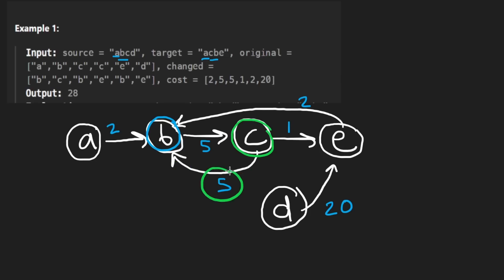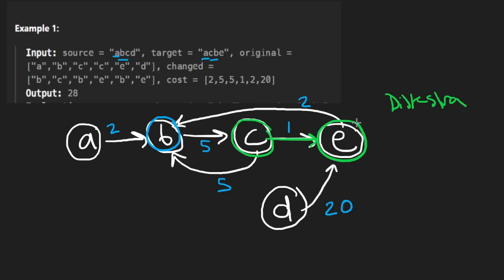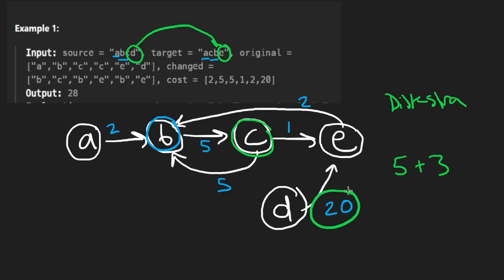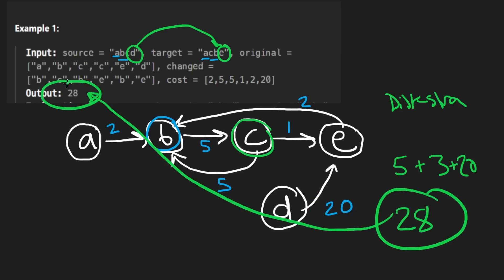So the minimum cost from C to B is 3. So far we have 5 plus 3. The last question is D to E: from D, there's only one outgoing edge — directly to E with cost 20. So we add 20 to the total, giving us 28. And that is the right answer.